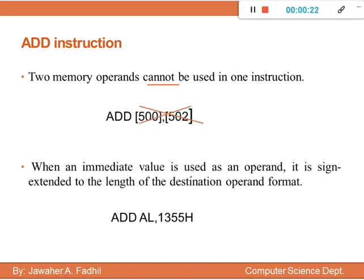When an immediate value is used as an operand, it is sign-extended to the length of the destination operand format. For example, using ADD with one word value and one byte destination (AL) — the source size is one word but the destination size is one byte. Since one word equals two bytes, this size mismatch cannot be used in the ADD instruction.